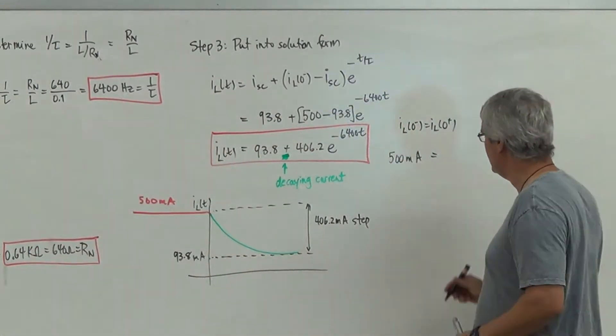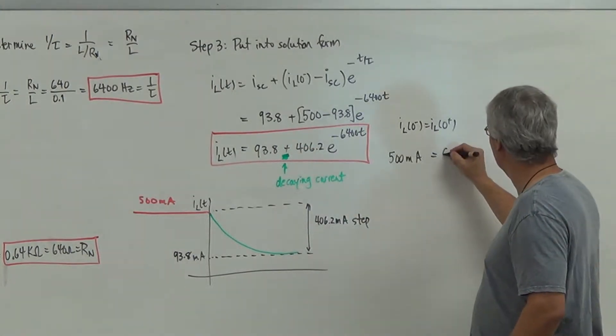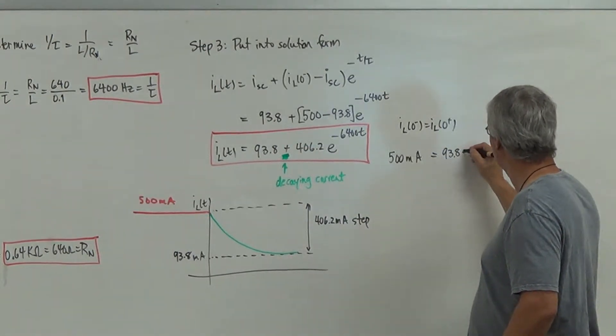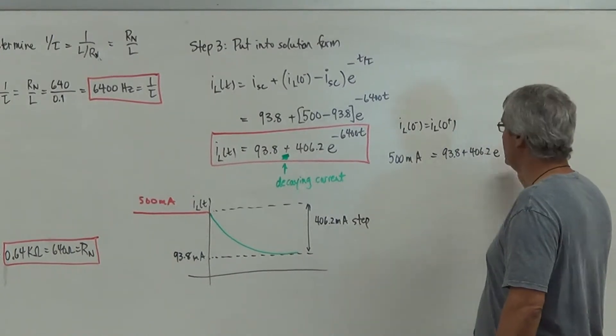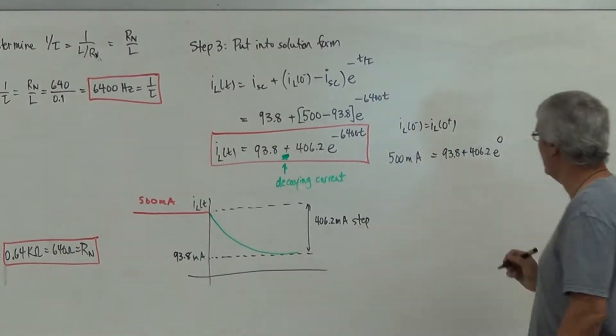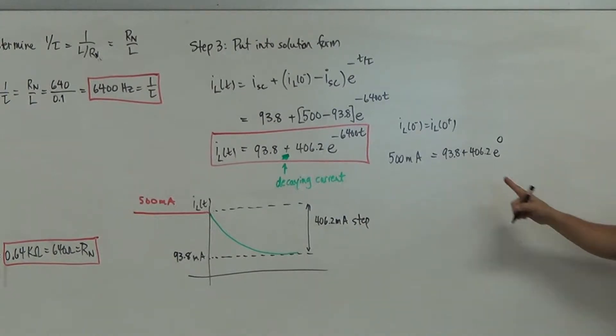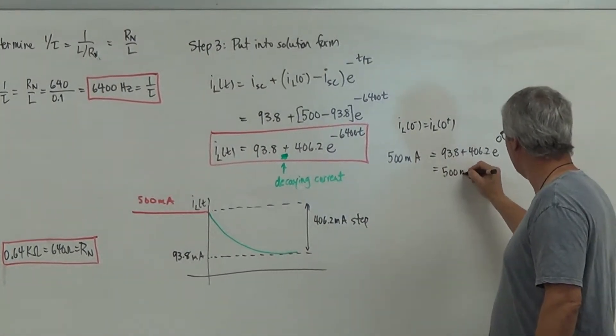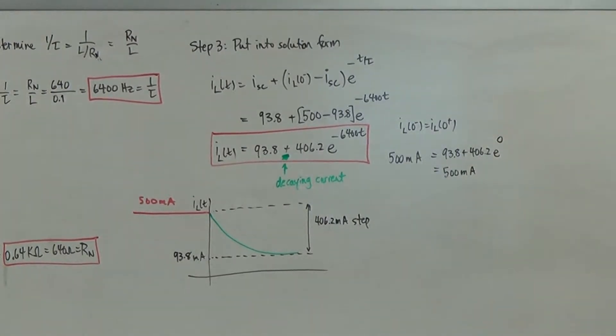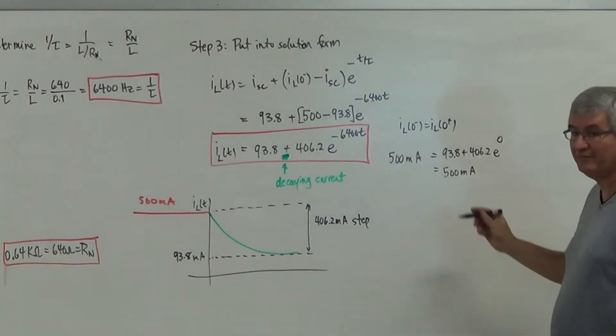Well, look at the solution. I get 93.8 plus 406.2 e to the zero. So when you add 93.8 plus 406.2, you get 500 milliamps. So on this side here, I get 500 milliamps. Just as we would expect. The current should be the same before and afterwards.